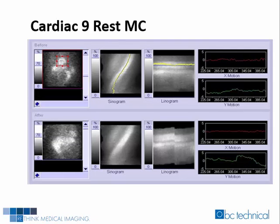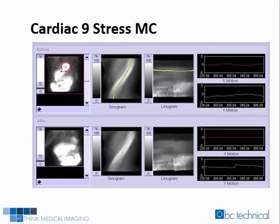Cardiac IX's resting study showed around two pixels of motion. The motion-corrected dataset exaggerated the motion and displayed over five pixels of motion after automatic motion correction was applied — increasing the motion from two to five pixels. Cardiac IX's stress study showed greater than two pixels of motion before automatic motion correction was applied. The motion-corrected dataset displayed relatively the same two-pixel motion as the non-corrected dataset.